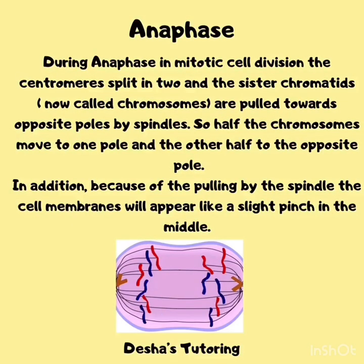Following alignment, the cell enters anaphase. During anaphase in mitotic cell division, the centromere splits in two and the sister chromatids, now called chromosomes, are pulled towards opposite poles by spindles. So half the chromosomes move to one pole and the other half to the opposite pole. In addition, because of the pulling by the spindle, the cell membrane would appear like a slight pinch in the middle.